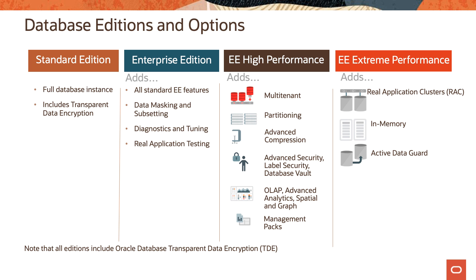From Enterprise Edition, as you move to the Enterprise Edition High Performance package, you get all the features of Enterprise Edition plus the multi-tenant option available in database 12c and higher, partitioning, advanced compression, advanced security, label security, database vault, OLAP, advanced analytics, spatial and graph, and the remaining management packs for Enterprise Manager. And finally, with Enterprise Edition Extreme Performance, you get everything in Enterprise Edition High Performance, plus real application clusters, the in-memory option available in database 12c and higher, and active Data Guard. Thanks for watching this video.